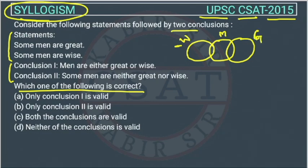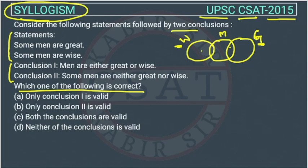Conclusion 1 states: men are either great or wise. This conclusion is saying a man will be either great or wise, but both can be great or wise. This is a possibility, but not a hundred percent certainty, so it is not definite — that's why we cannot consider this conclusion.